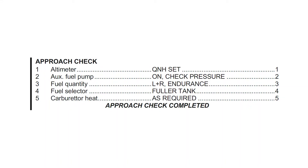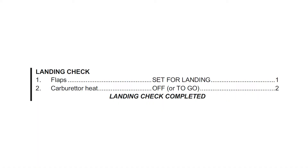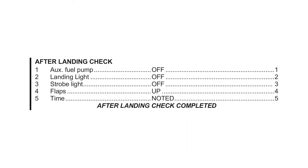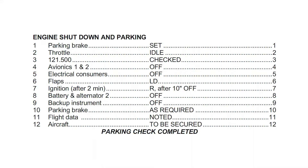As you get closer to the airport, you generally have the approach check, where you verify a few more things before the landing check, where you set the flaps for landing and prepare to land. Once landed, there are two more things left in the checklist: the after-landing check, where you switch off the landing light, set the flaps up, and do a few more things before taxiing to the parking; and then the engine shutdown and parking procedure, where you shut down the plane and secure it before leaving.